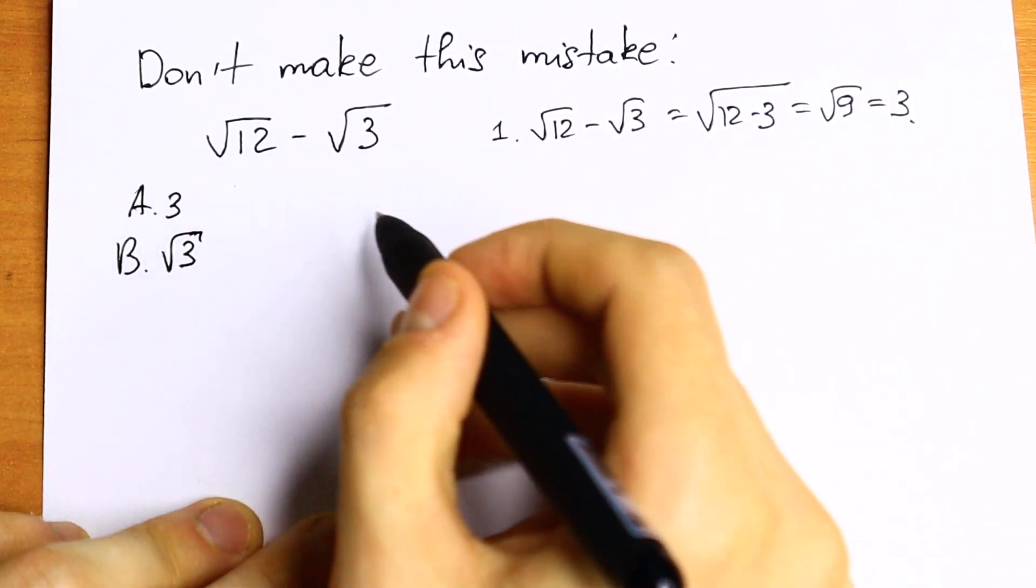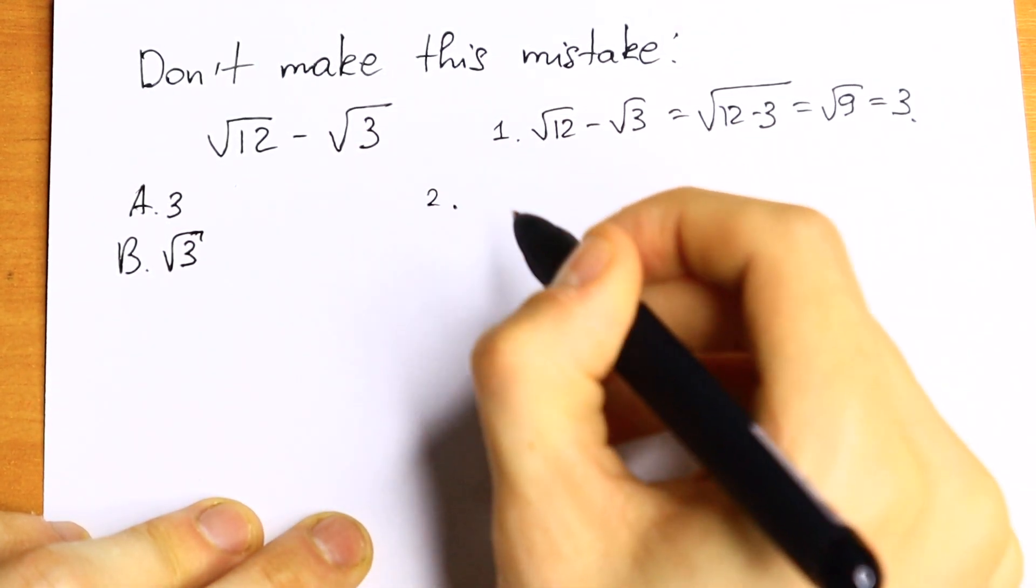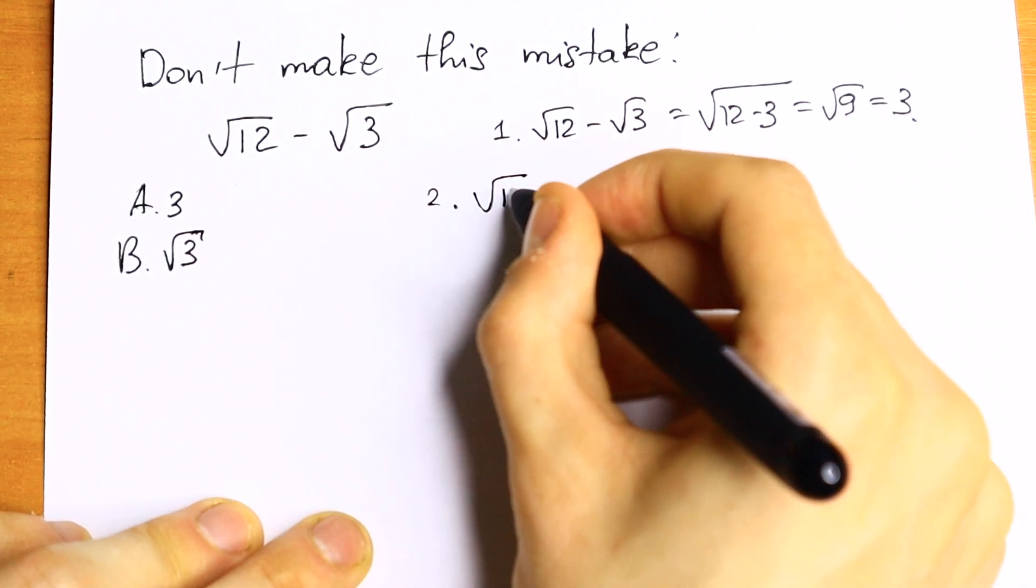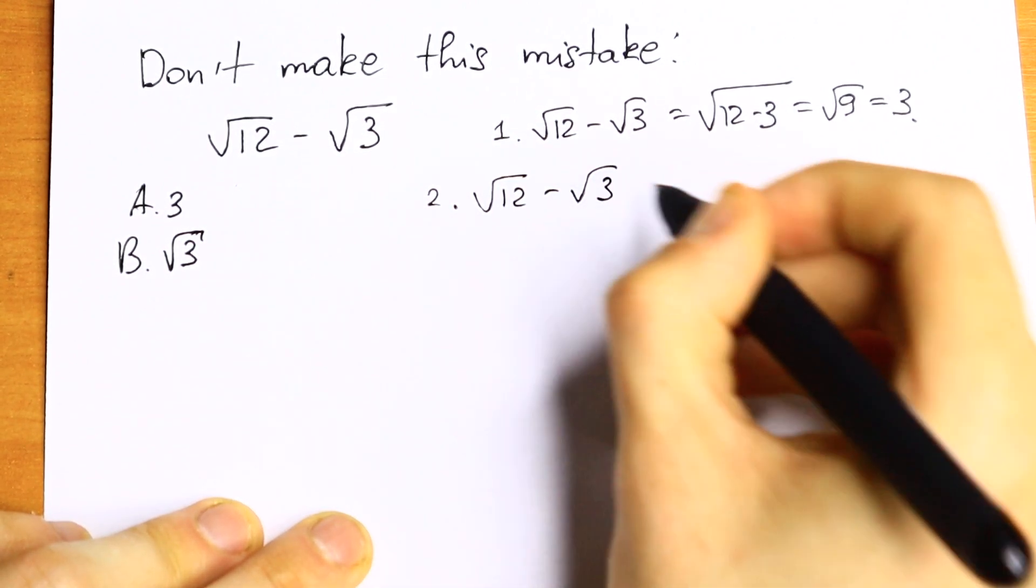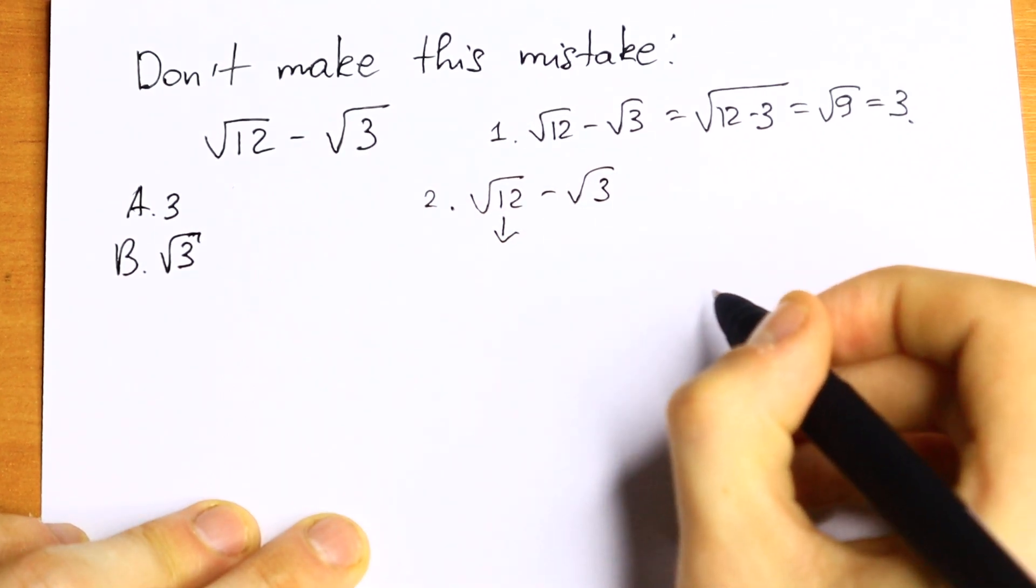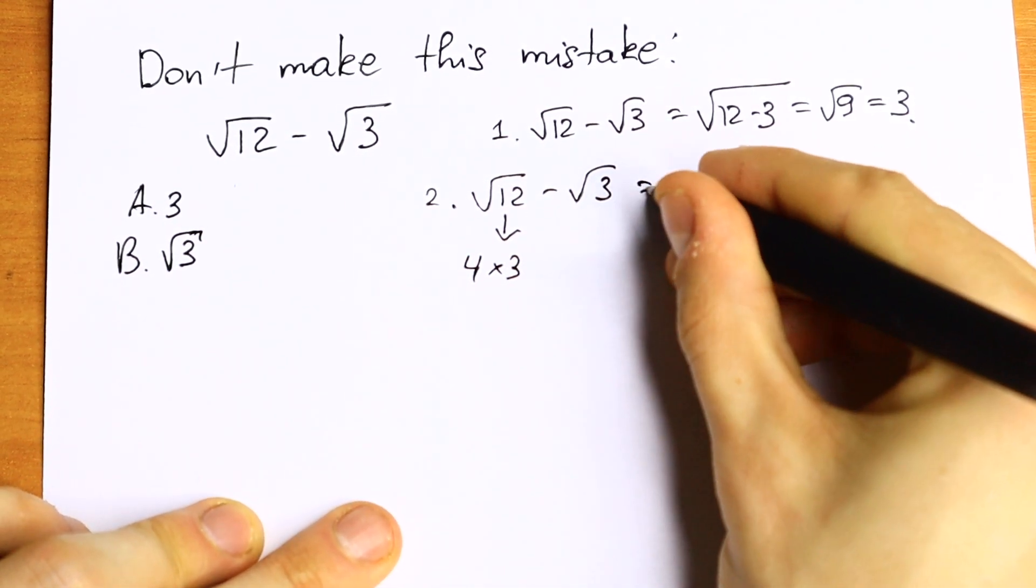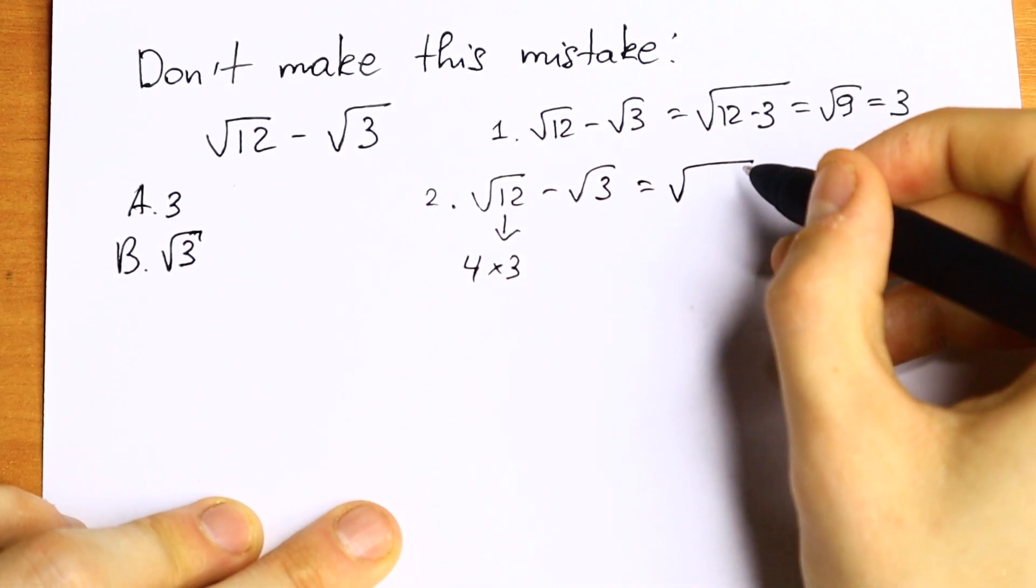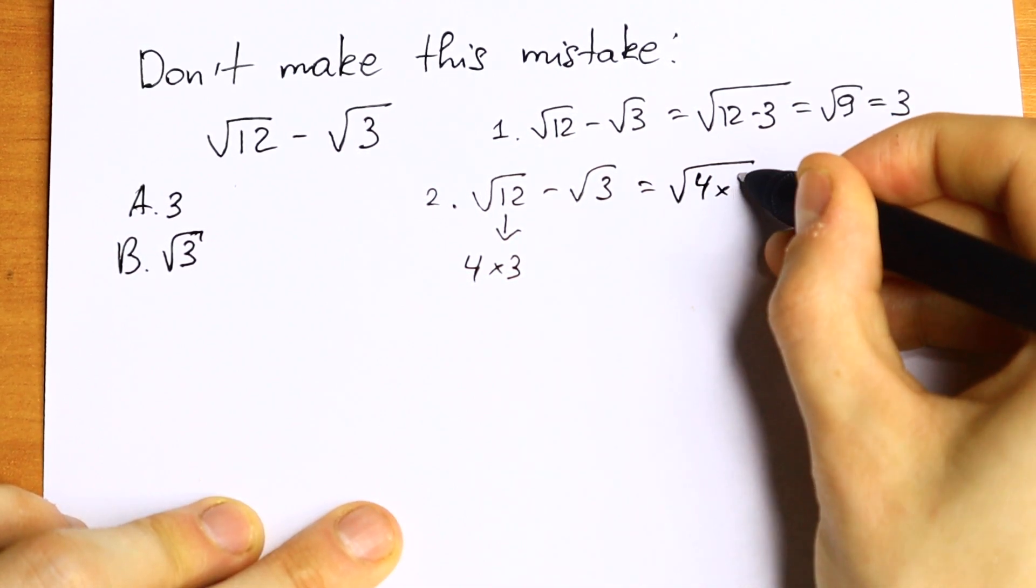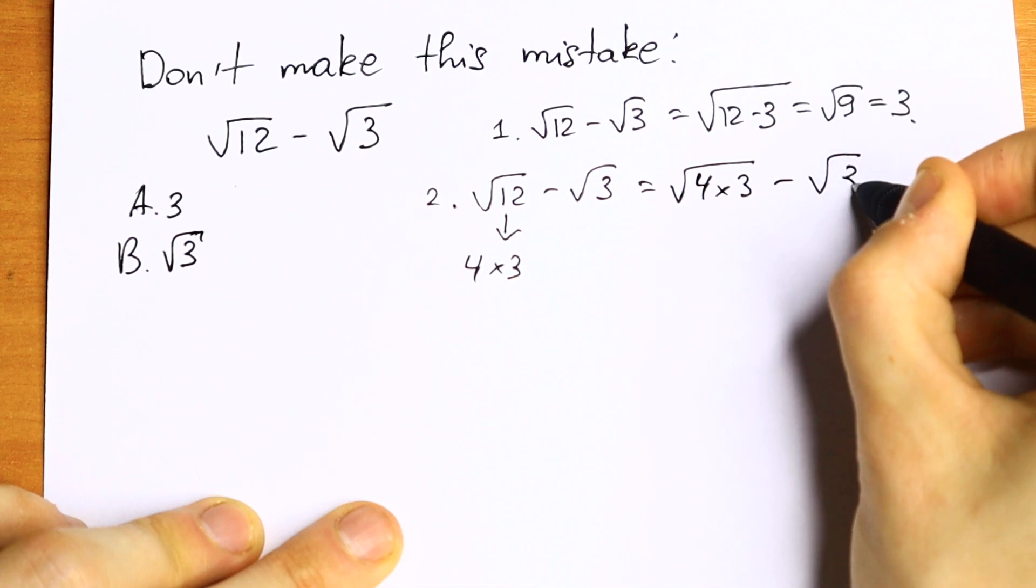But take a look what I can do. The second way, we can write square root of 12 minus square root of 3. We can write this 12 as 4 times 3, and we'll have square root of 4 times 3 minus square root of 3.